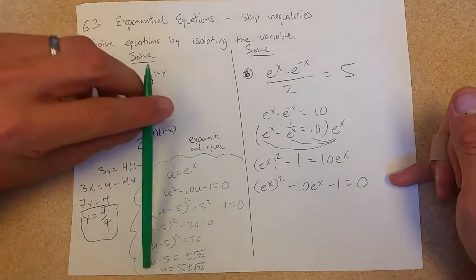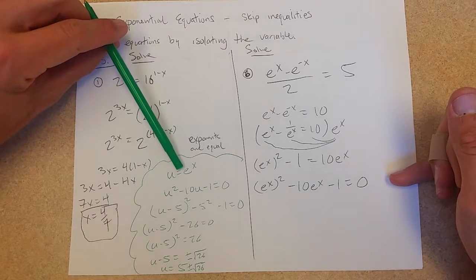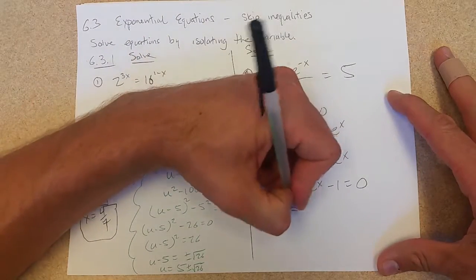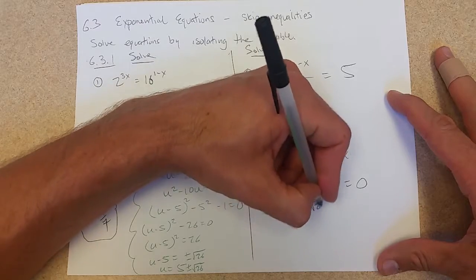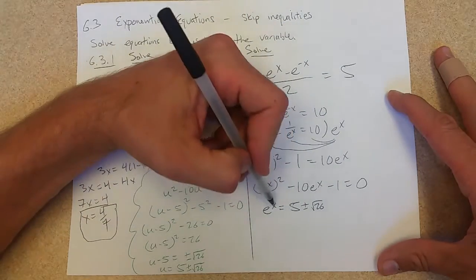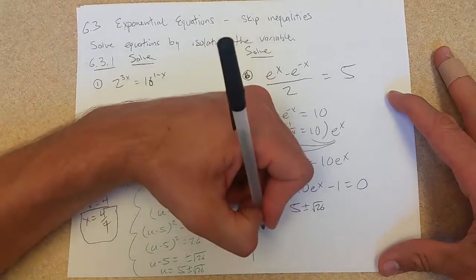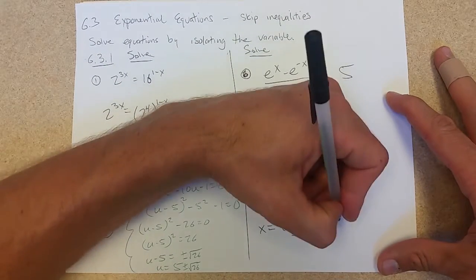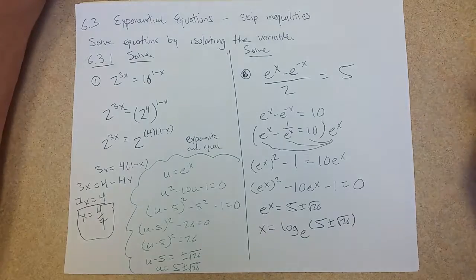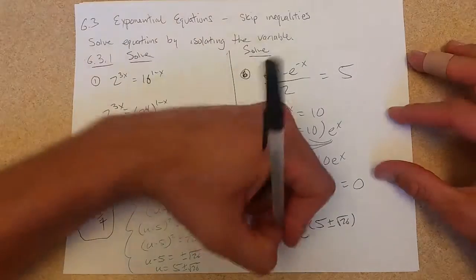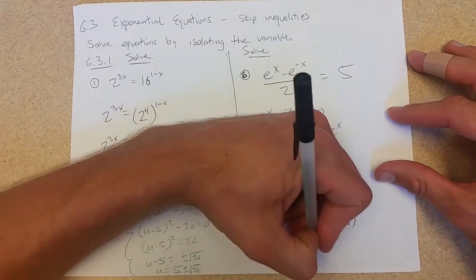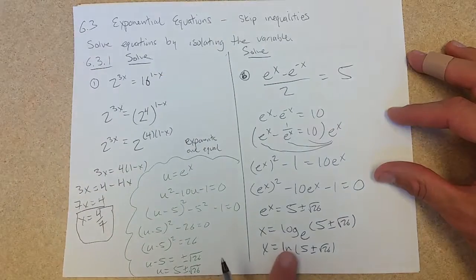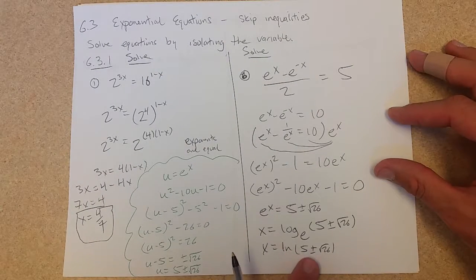Now that's u. That is not our original x. So we have e to the x equals 5 plus or minus square root 26. How do we solve here? We need to move the base to the other side. So this is x equals log base e of 5 plus or minus square root 26. And I could write it as ln if I was going to submit this to WebWork. You have to be a little careful. We have a log here.